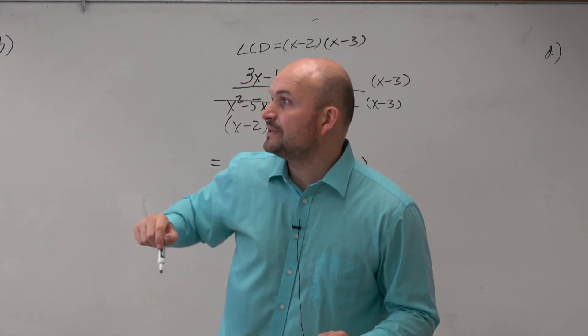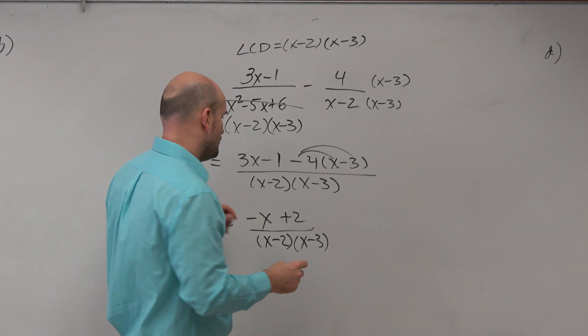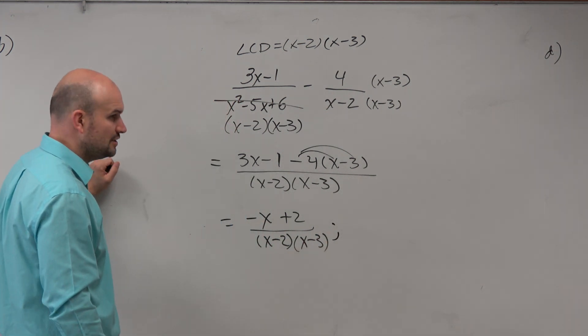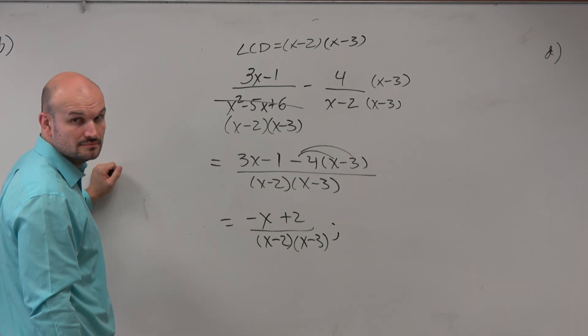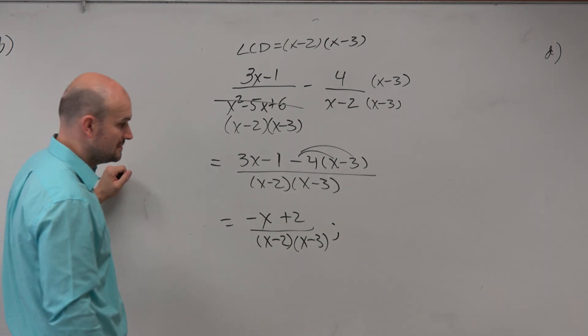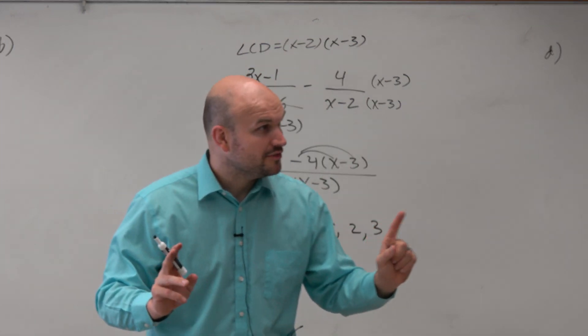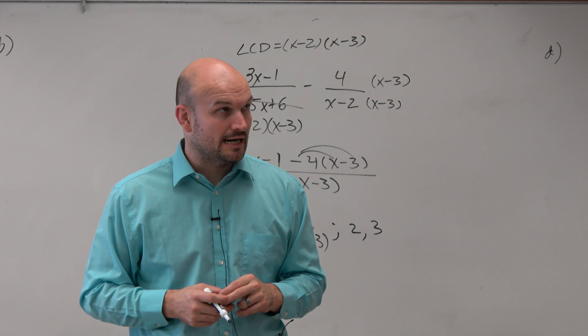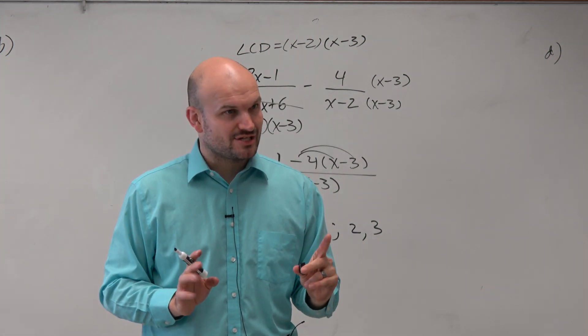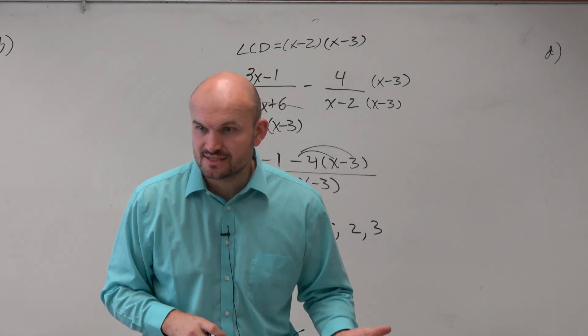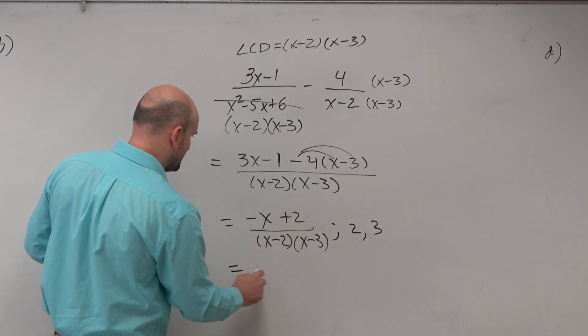I didn't explain that. Oh, I did write it up there. I said, make sure you include the excluded values. So we've got to say, hey, well, what values can we go ahead and exclude? We can exclude 2 and 3. Because those are the values that make it 0, right? But then, we should also go back and check and say, can we simplify this any further? Well, I see a negative. If I factored out that negative, look what happens.